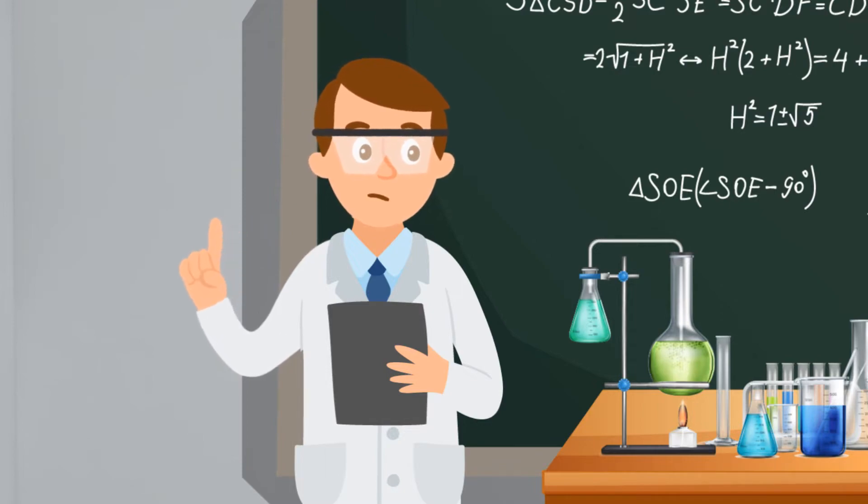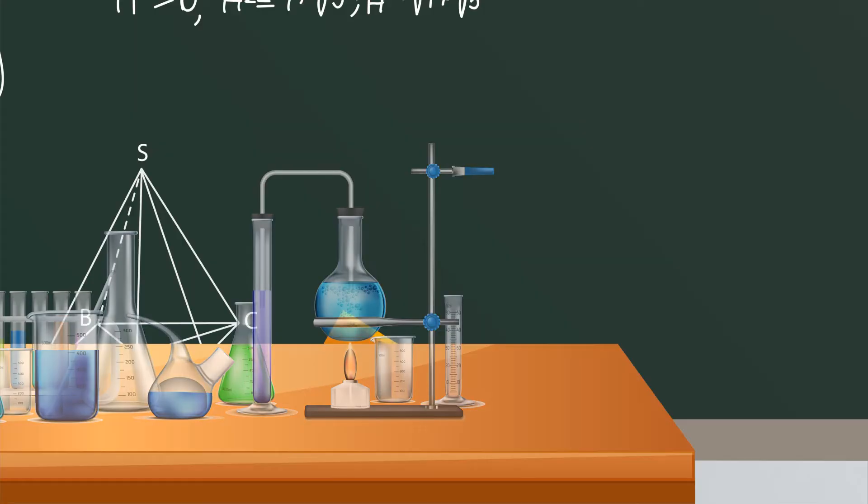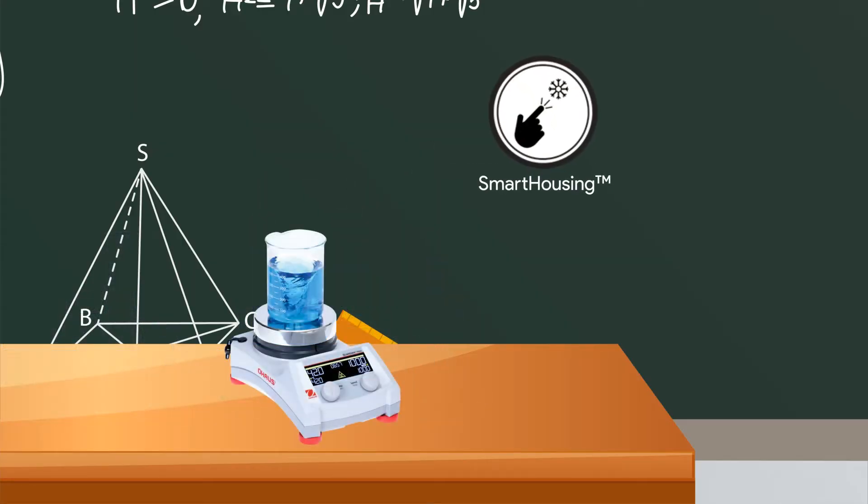Safeguarding teachers and students is a guiding principle behind every piece of O-House laboratory equipment. The Guardian Series Hot Plate Stirrers assure lab safety with our smart technology like smart housing.